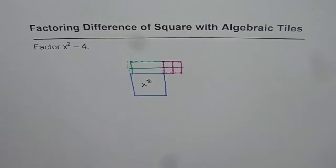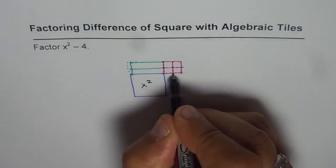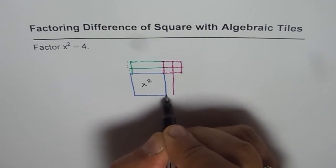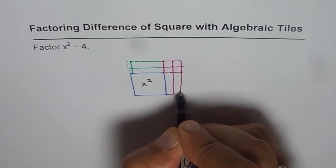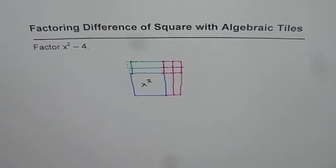Now since I added 2 x tiles, we should take away 2 also. So I am taking away 2 from the other side. So these are the 2 minus x tiles. Now what do we get?